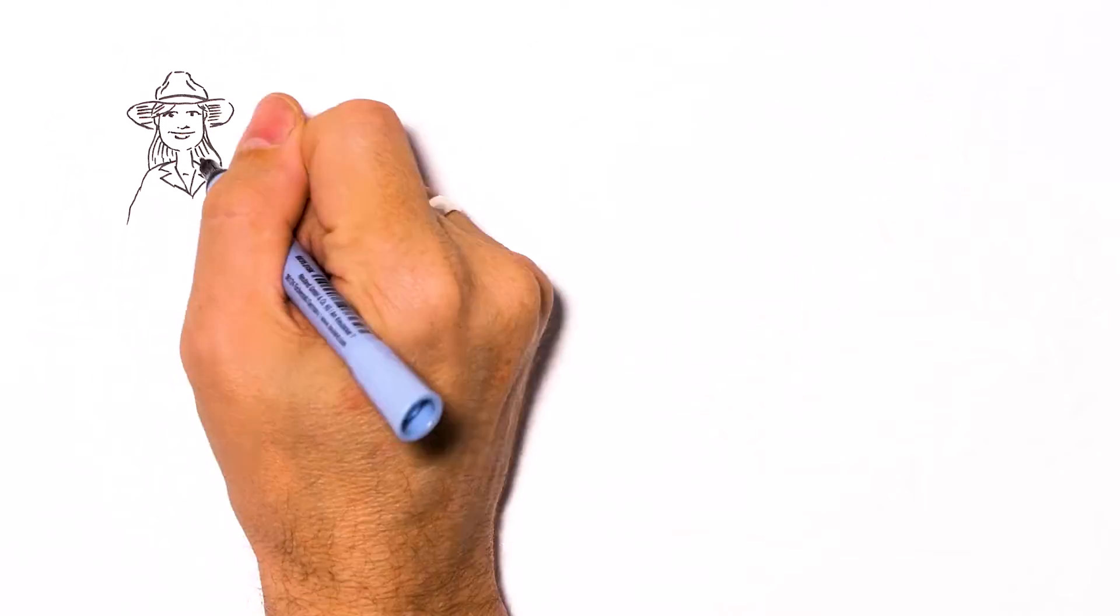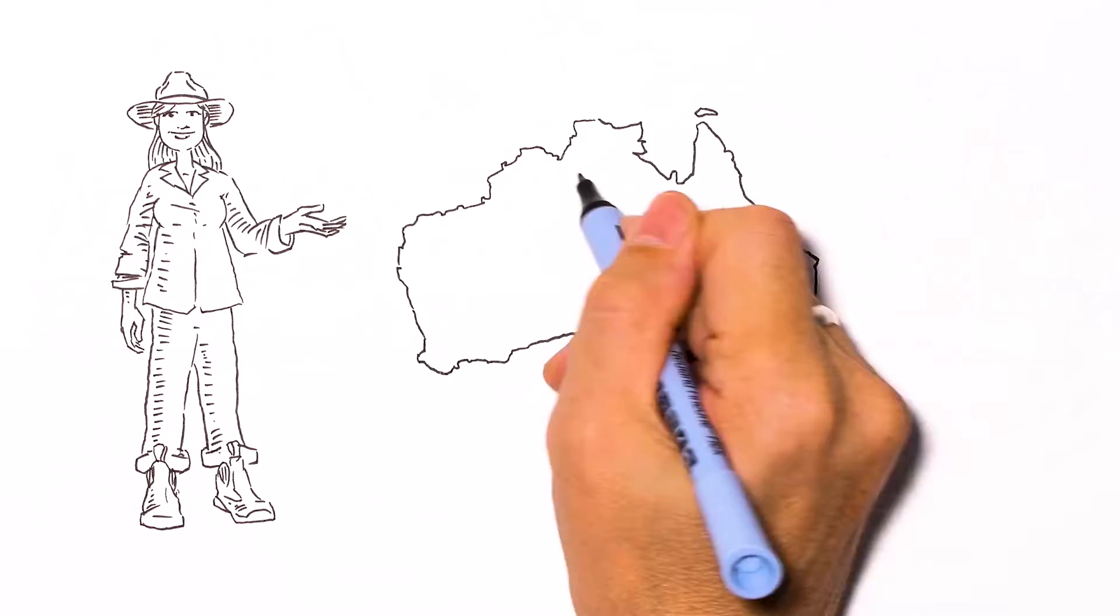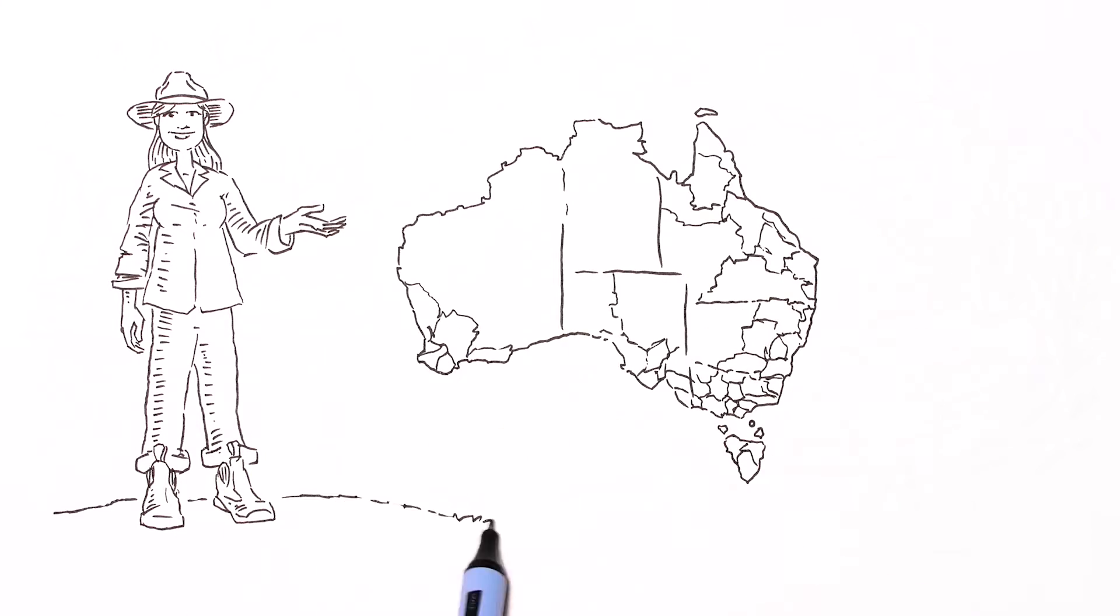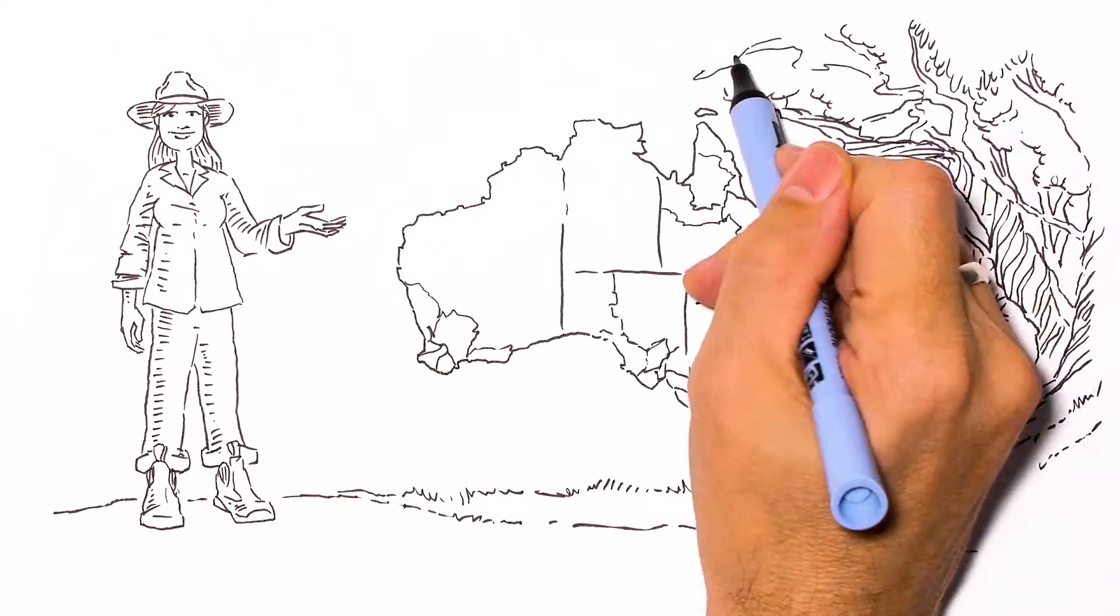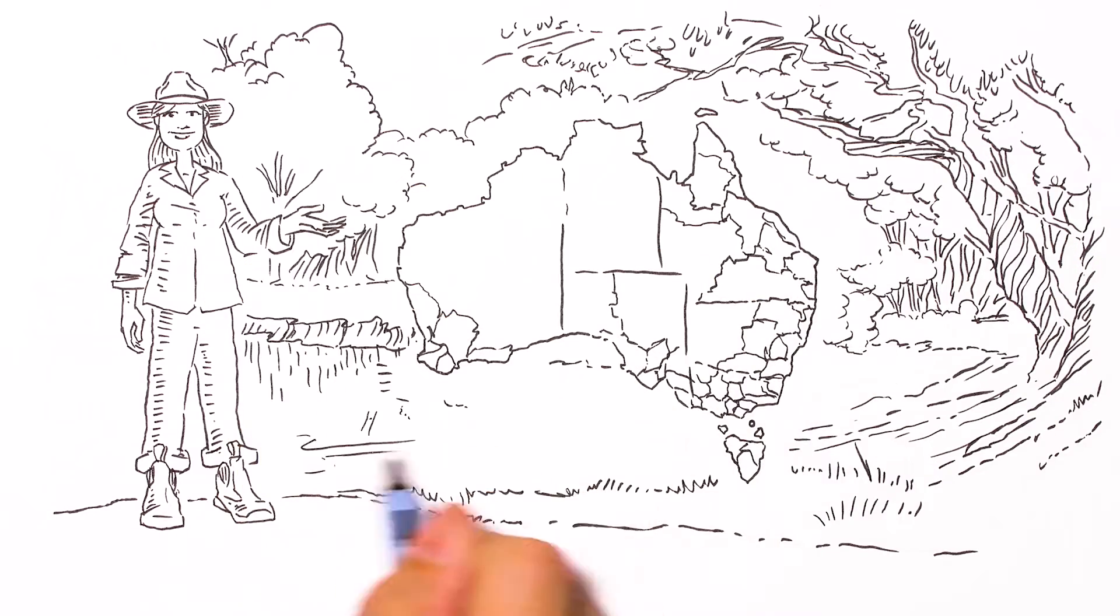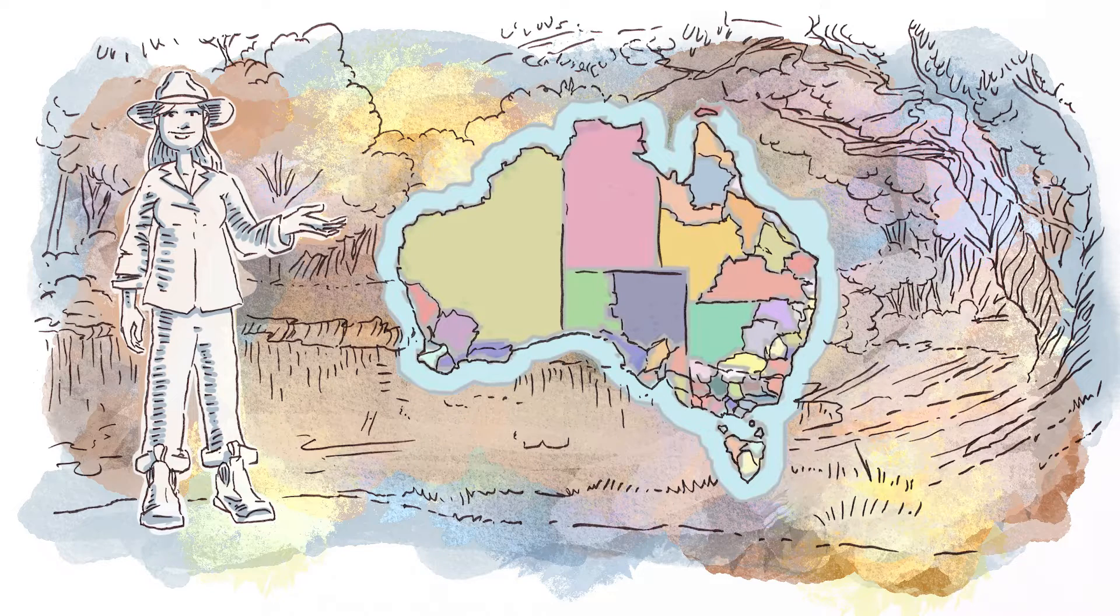Australia is unique, so it's fitting that we have developed a unique way of managing our regional natural resources. Natural Resources Management Regions Australia is a national peak body for Australia's 54 regional NRM organizations. Their work covers the entire continent.